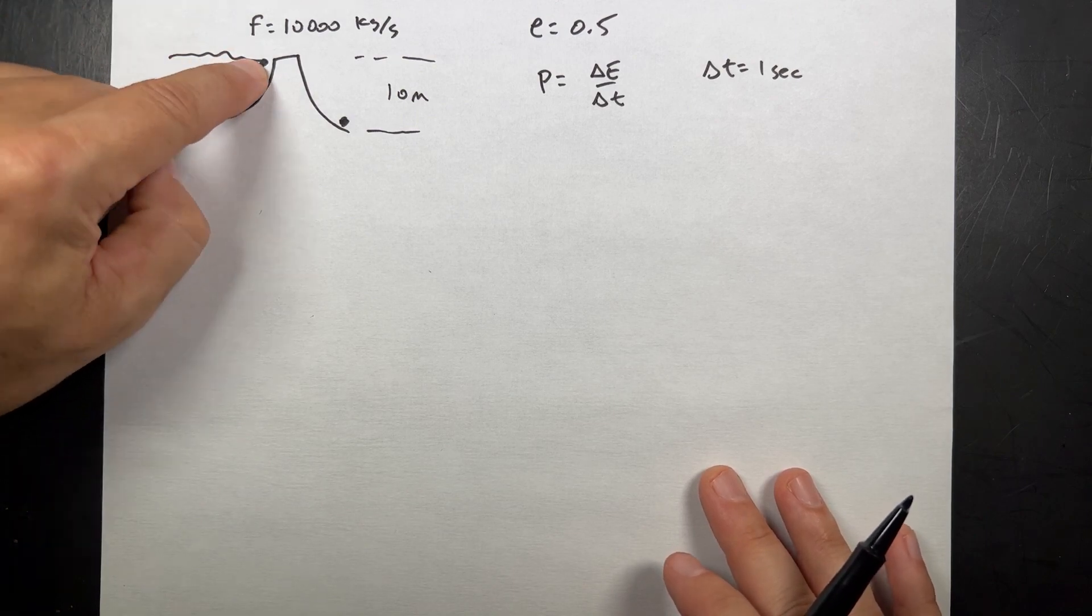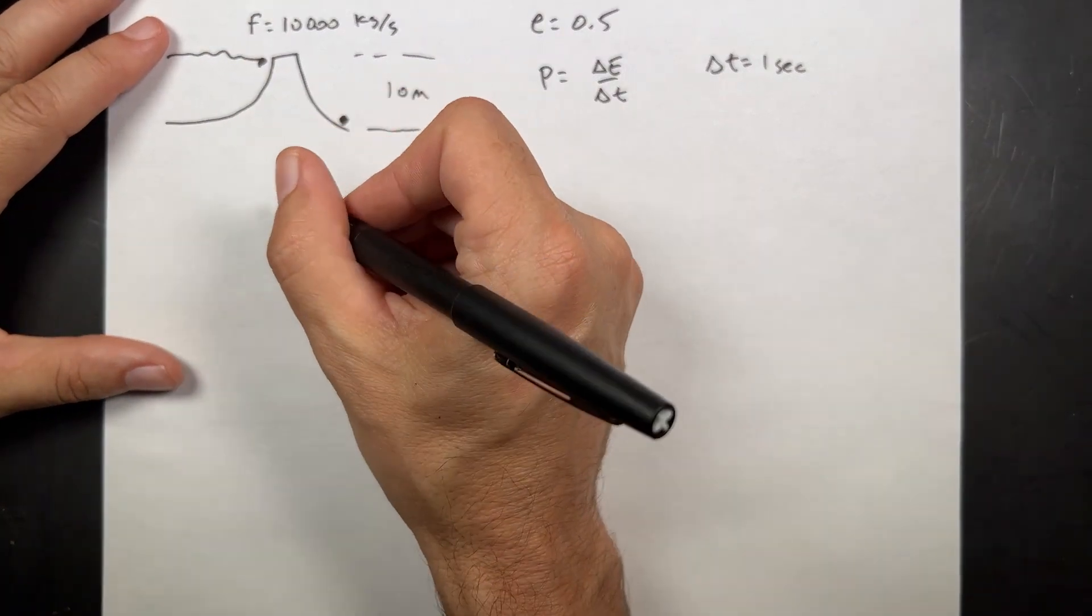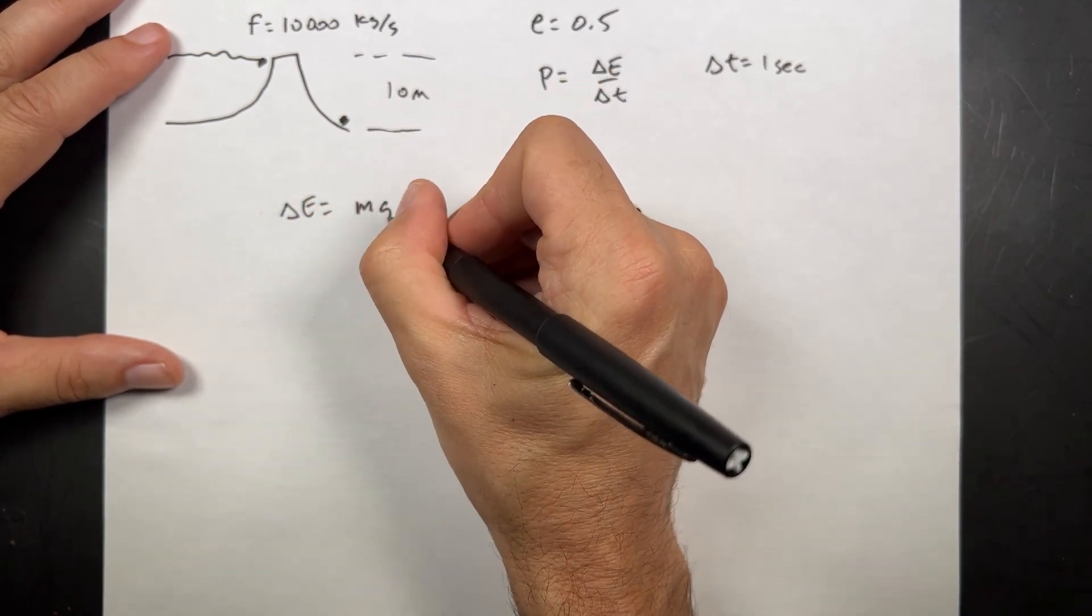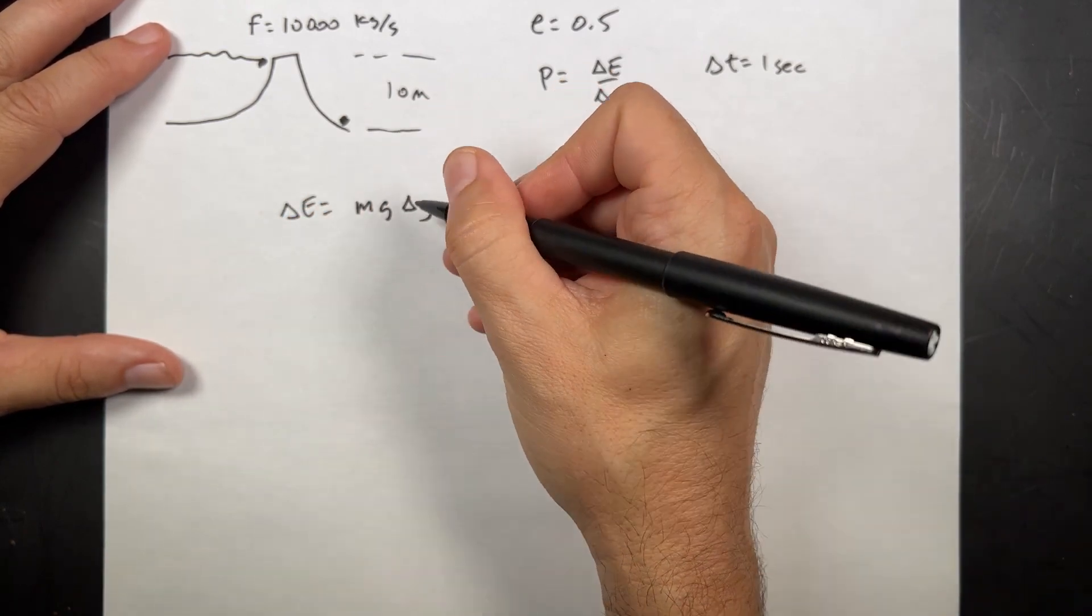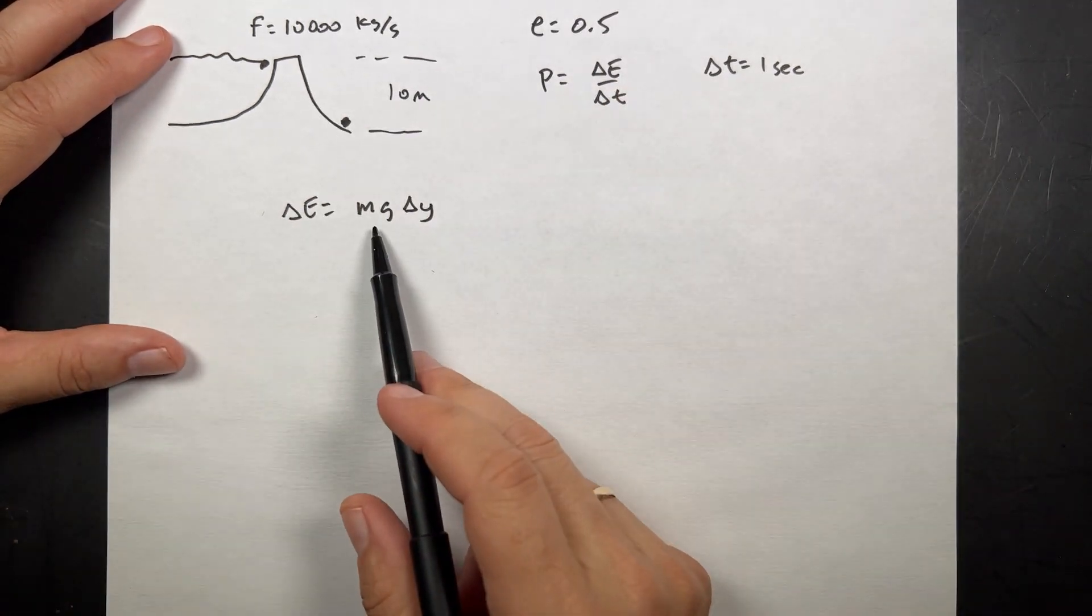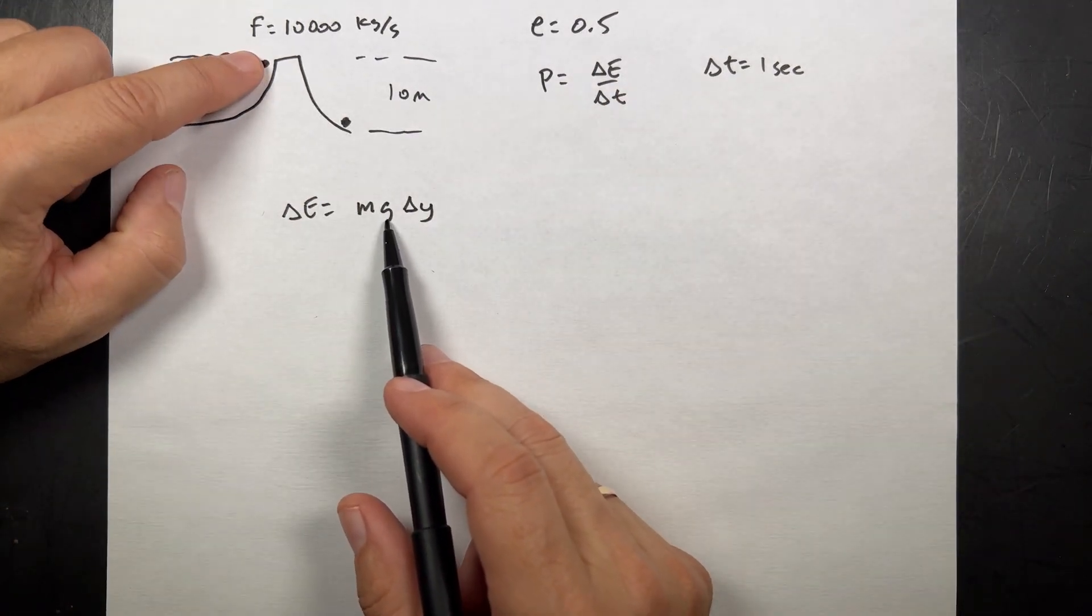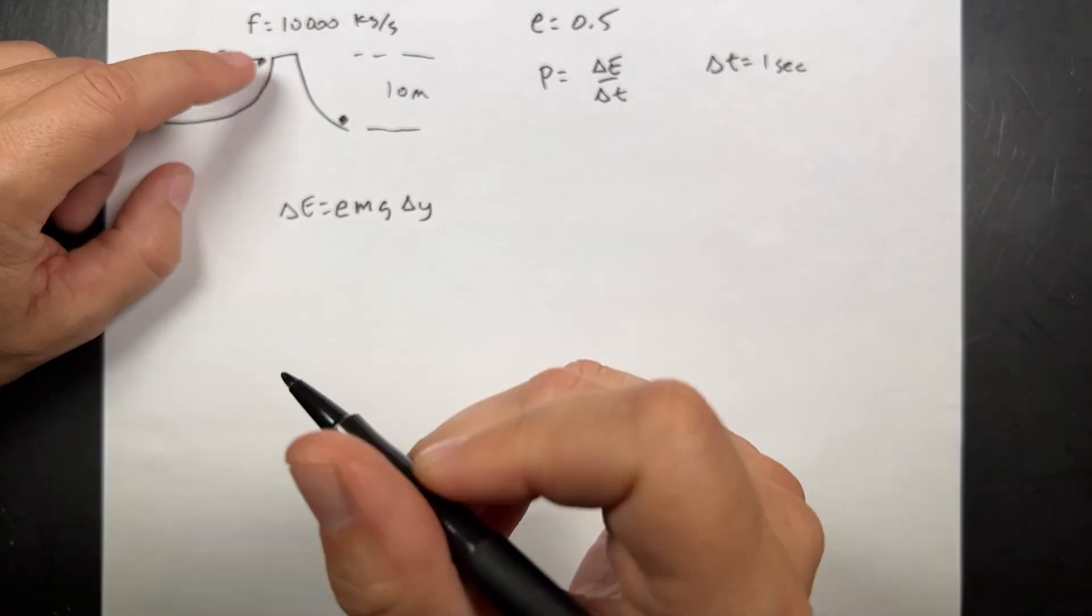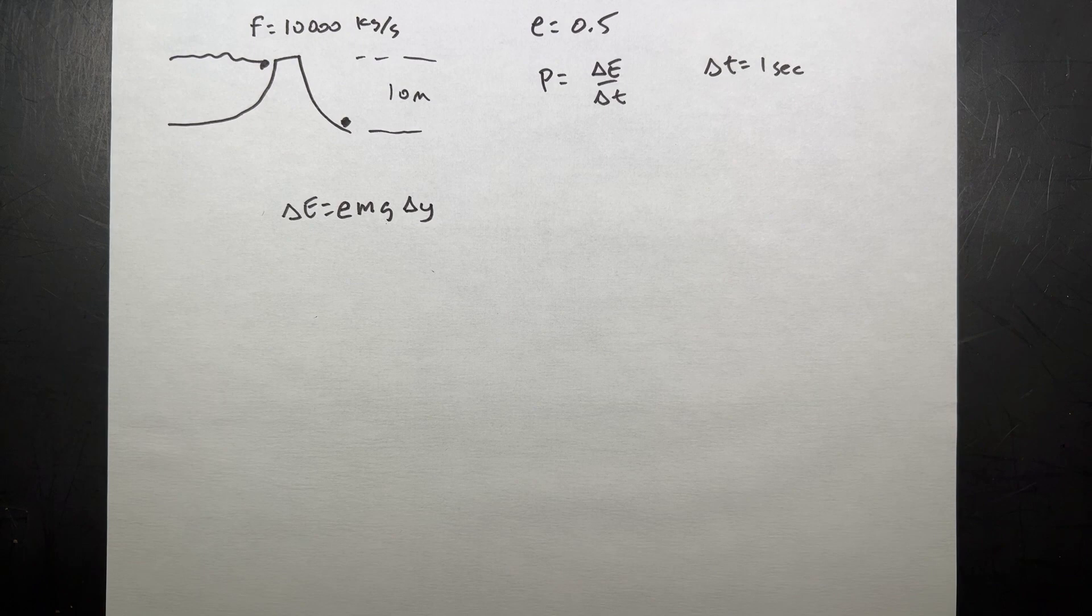And so in that one second, how much energy do I get from the water? So I can say delta E is going to be M G delta Y. That's the mass that falls over the waterfall times the gravitational field G times the change in height. And let's actually also convert that with E, the efficiency.